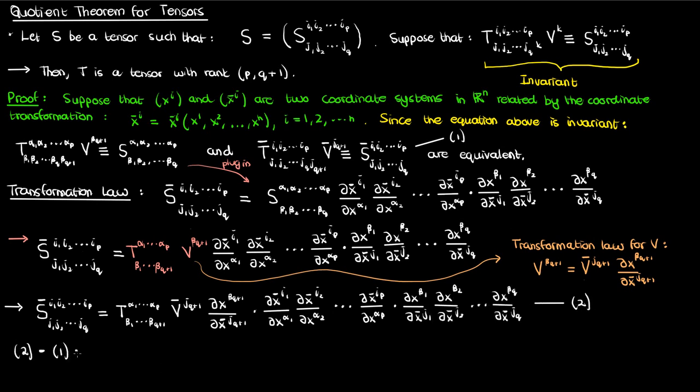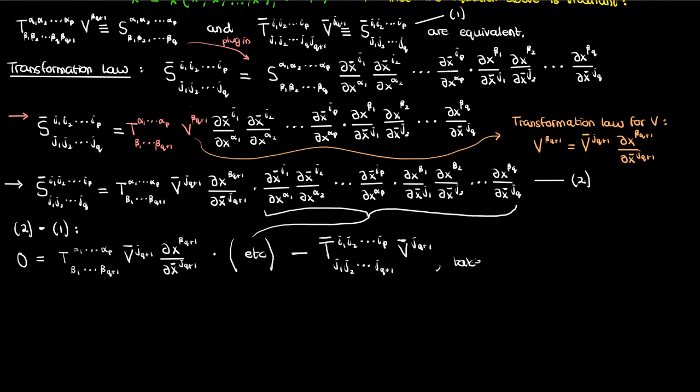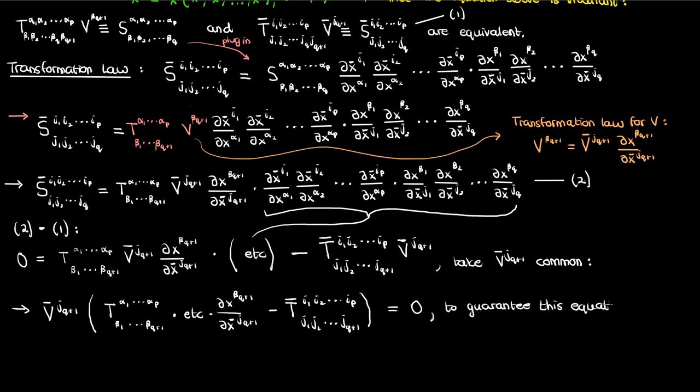Next what I'll do is subtract equations 2 and 1. The S part of the equations is the same, so that side of the equation becomes 0. Meanwhile, this is what we end up with on the right hand side. Now here what we can do is take the V bar component common and end up with the following. And since V is an arbitrary vector, the only way to guarantee that this equation is 0 is to have the term in the parentheses equal 0.